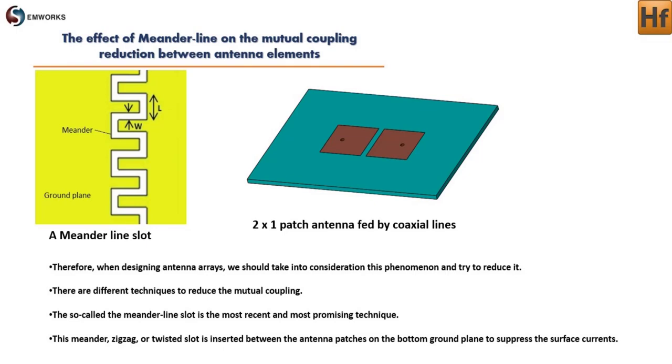This meander, zigzag, or twisted slot is inserted between the antenna patches on the bottom ground plane to suppress the surface currents.